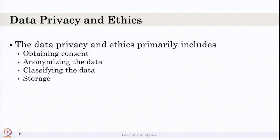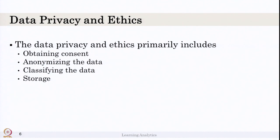The first is obtaining consent. The consent form means you have to inform the participant and get their consent confirming they are ready to give data for research purposes or that we can use the data for research purposes.